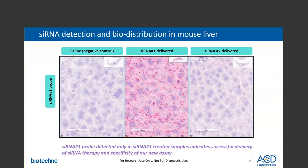In this next example, our customer generated two different siRNA compounds to determine the best solution for their siRNA therapy. We successfully detected siRNA number one target in the siRNA number one delivered sample, and not in the saline negative control nor in the siRNA number two delivered sample. Using our new assay, the customer was able to study the biodistribution of siRNA number one delivered in mouse liver tissue.